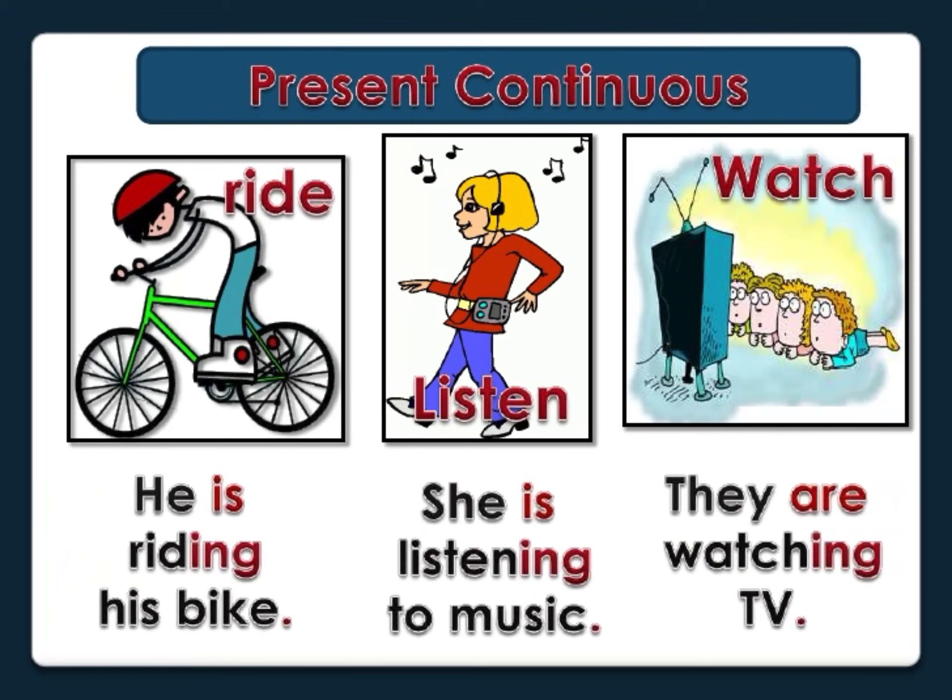So to form the present continuous, you have to take into account that: we say the personal pronoun — he — then we say the verb to be — is, or are — depending on the personal pronoun, and then we have the verb with I-N-G at the end. He is riding his bike. She is listening to music. They are watching TV.